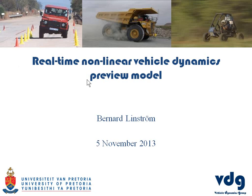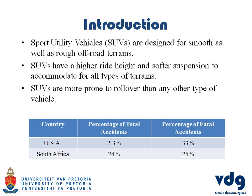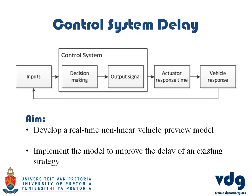Good afternoon. I'll be talking today about a real-time nonlinear vehicle dynamics preview or prediction model. We use it on SUVs, which are designed for both rough off-road conditions and smooth roads. A problem arises because the suspension has to cater for either one or the other, making SUVs more prone to rollover. In the USA, rollovers account for only 2.3% of accidents but 33% of all fatalities.